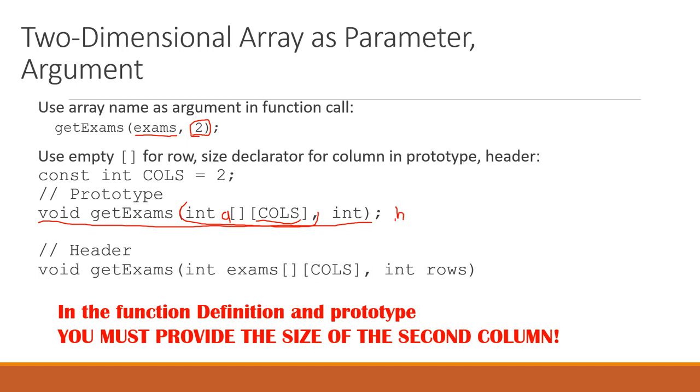If you are writing a function and you're going to be passed a two-dimensional array, you must specify how many columns there are. You do not have to specify the first element. There can be as few or as many rows as you want, but for each row you must tell it how many columns there are. That's an absolute requirement. Here's our header - it's a void function called getExams. I declare an integer array, don't tell it how many rows there are, but I do pass it a value to tell how many rows there are.